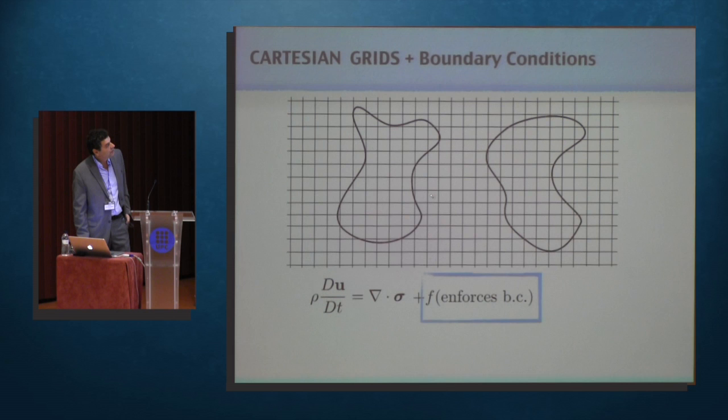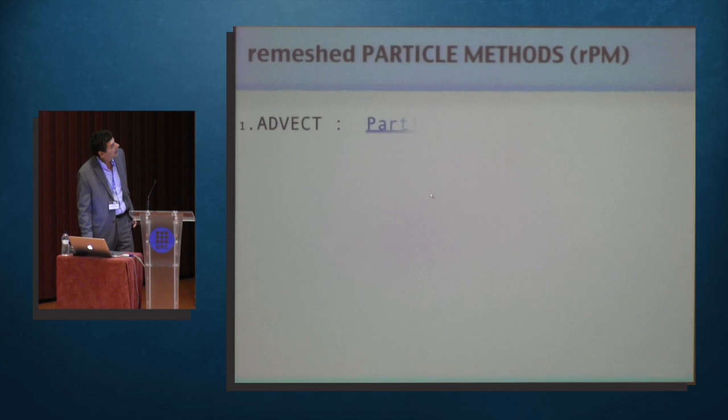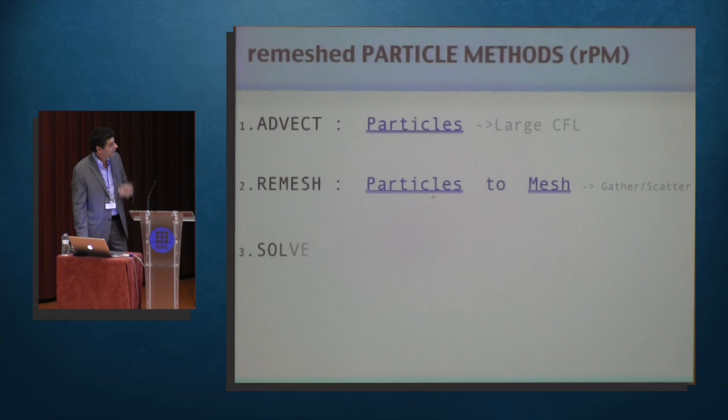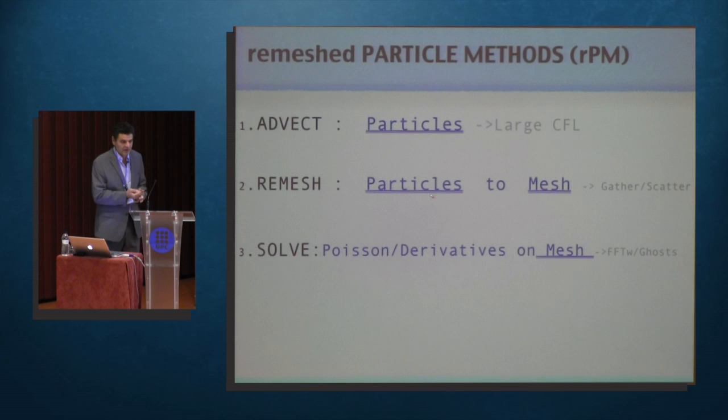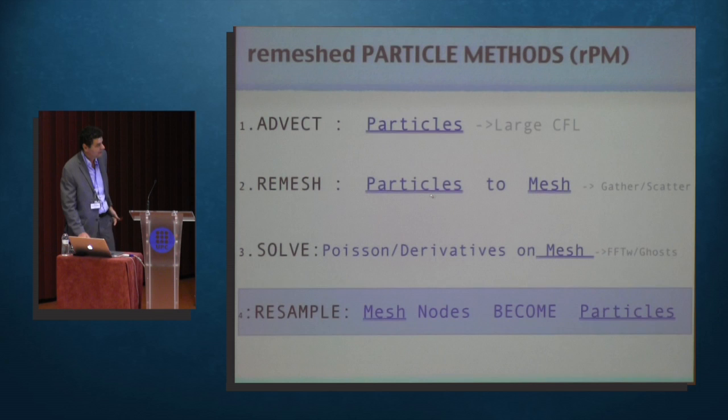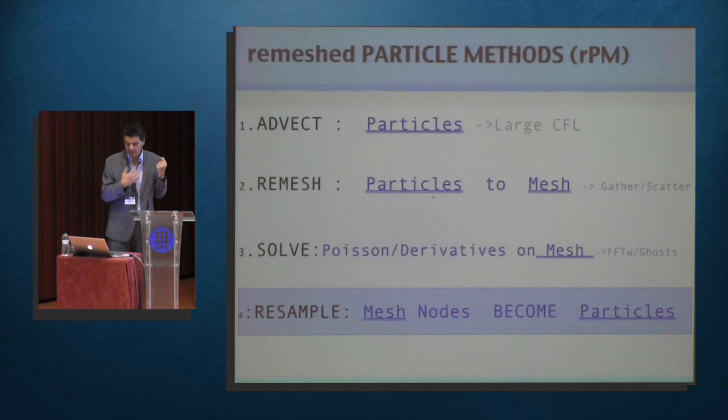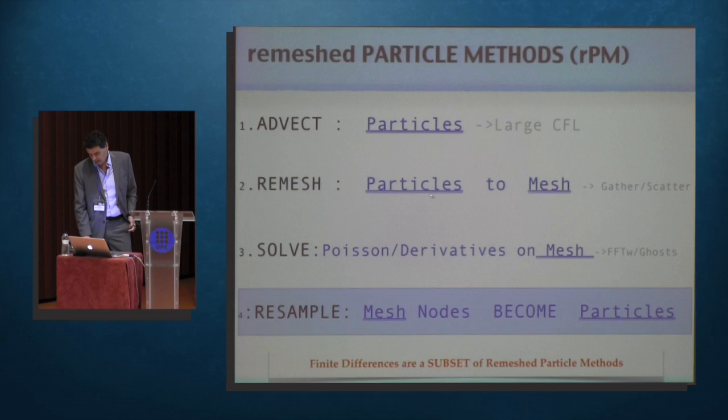You can see that finite differences become a subset of remeshed particle methods. By using these Cartesian grids where you can do the remeshing, you can use other techniques to do complex geometries by adding a forcing term and employing penalization or immersed boundary methods. How do the methods work? You advect particles, so you maintain the large CFL particle methods are good for. Then you have to do this horrible thing of putting particles back onto a mesh, but then you can use the mesh for computing every derivative you like. Those of you who do SPH, you can imagine that you have to do, in 2D, about 25 operations to carry a derivative. People who do finite differences, they can do it with five. Plus, you can do everything with Poisson solvers. You don't have to do fast multipoles. Then the new thing is that the following time step, you forget the old particles, and your mesh nodes, the grid, becomes particles to be advected.